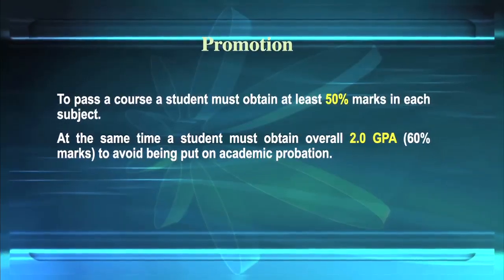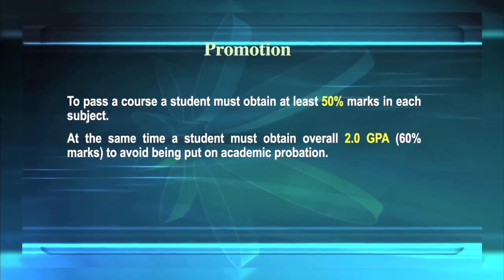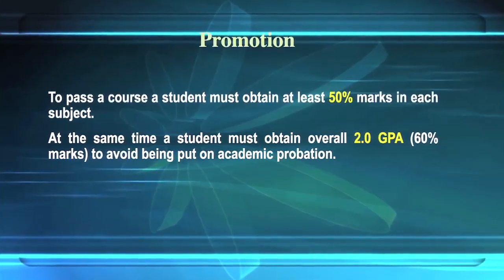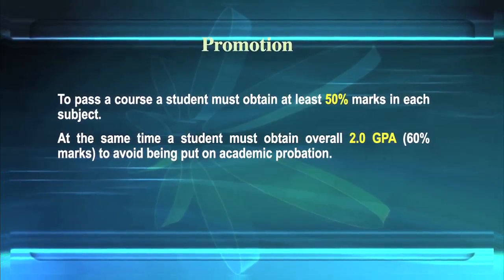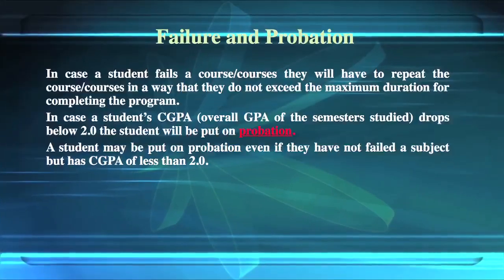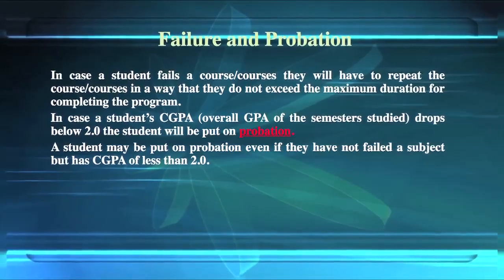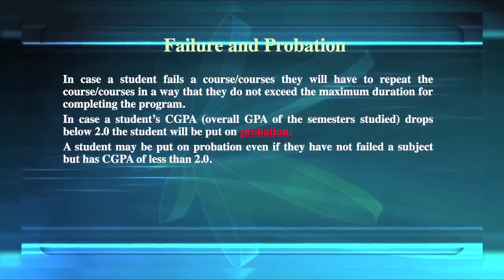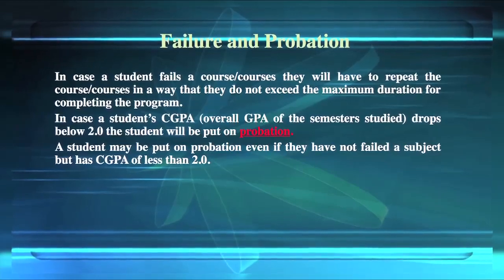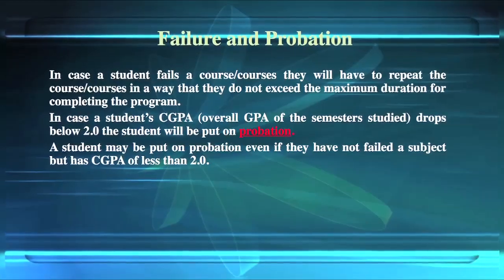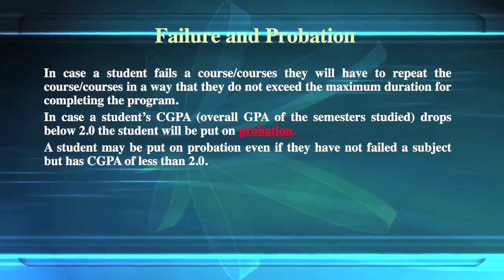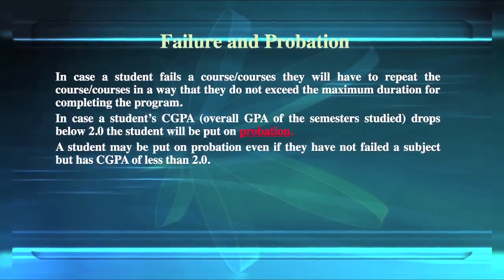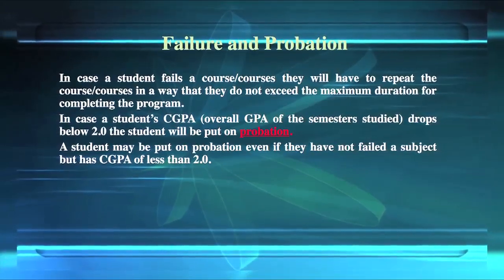To pass a course, a student must obtain at least 50% marks in each subject. At the same time, a student must obtain an overall GPA of 2.0, i.e., 60% marks, to avoid being put on academic probation. In case a student fails a course or courses, they will have to repeat the courses in a way that they do not exceed the maximum duration for completing the program. If a student's CGPA falls below 2.0, they will be put on probation — even if they have not failed a subject but have a CGPA of less than 2.0.